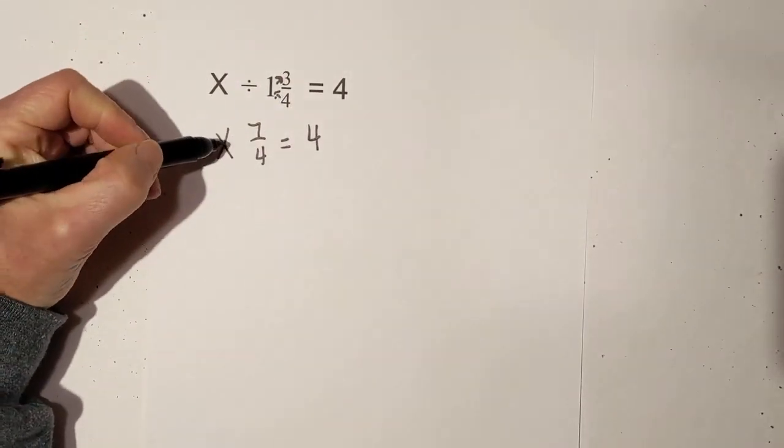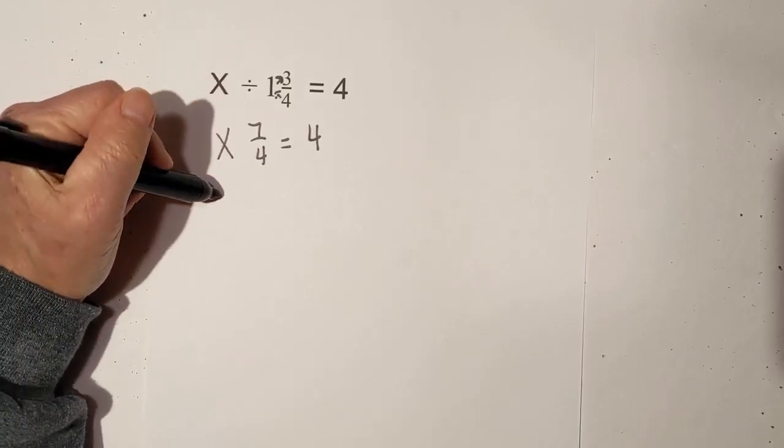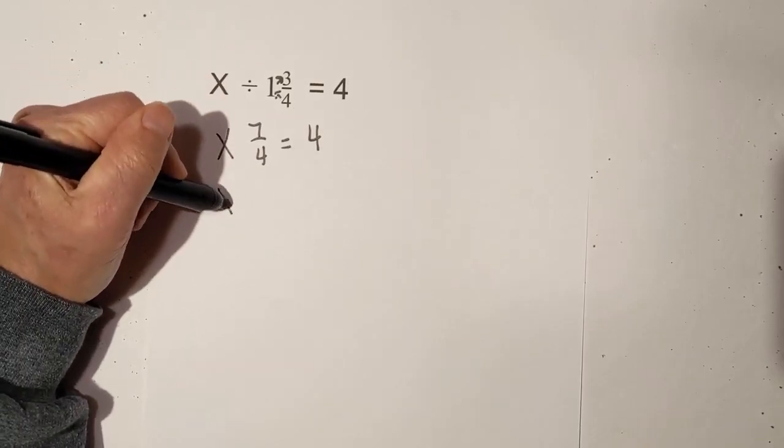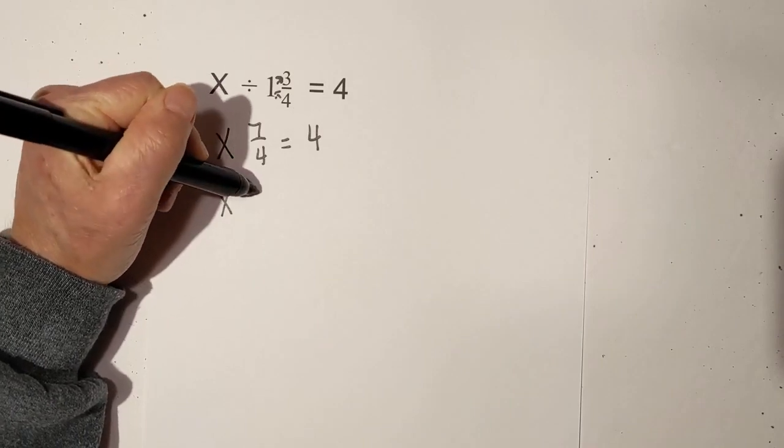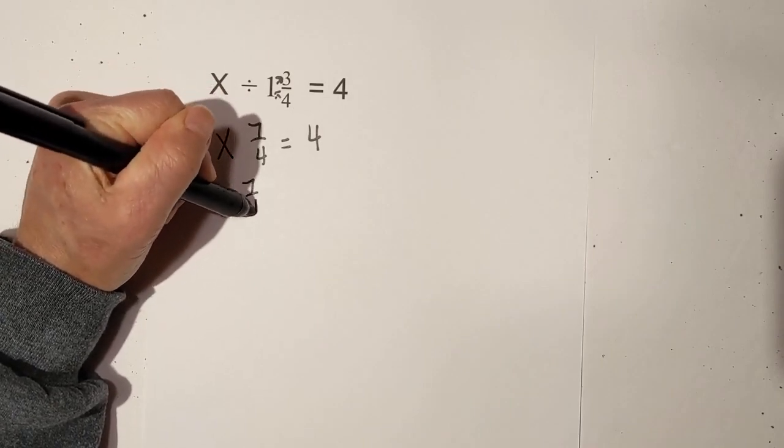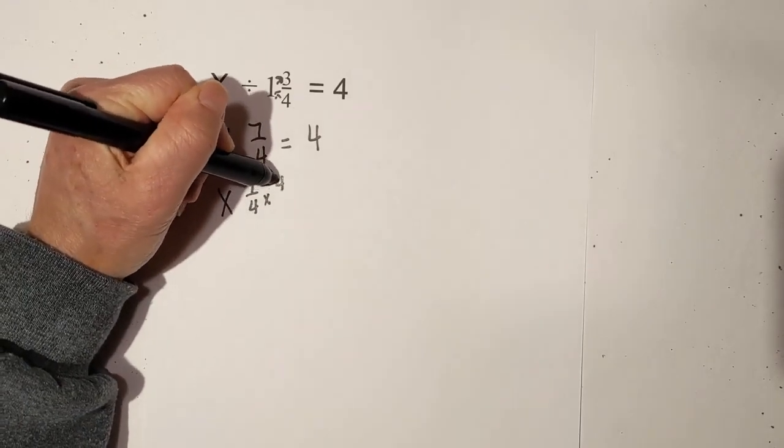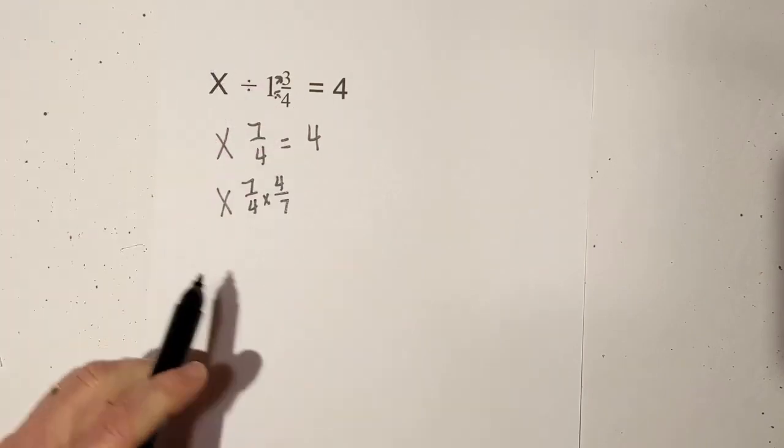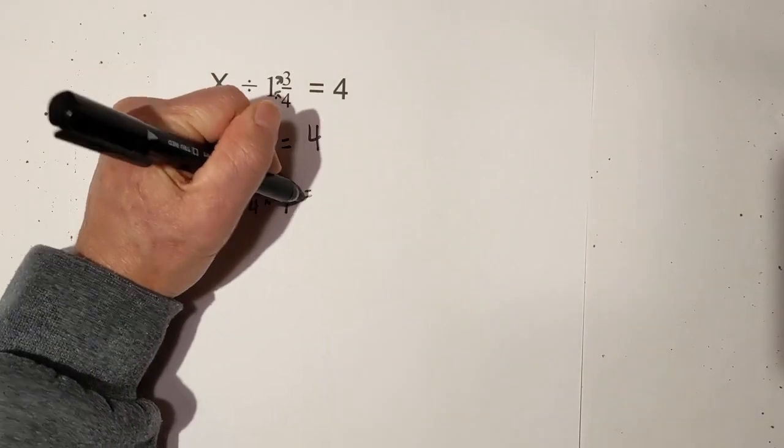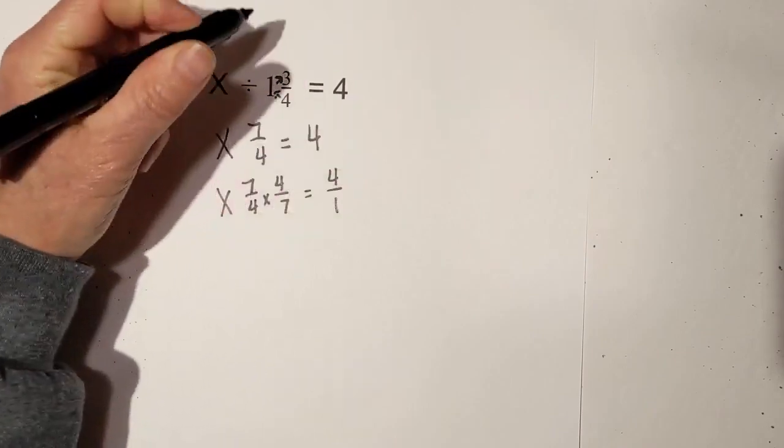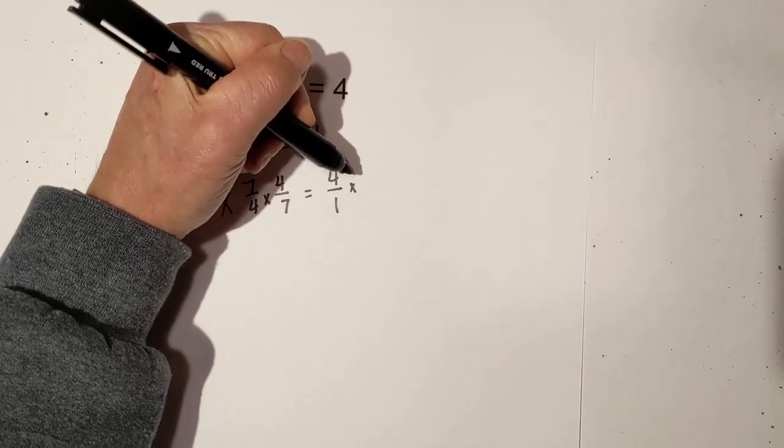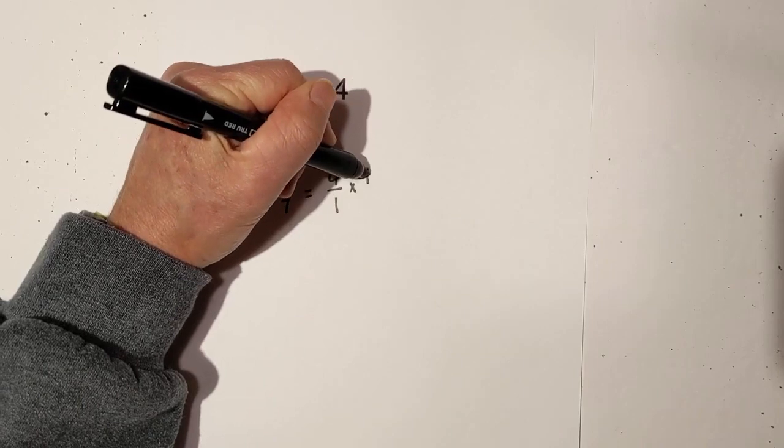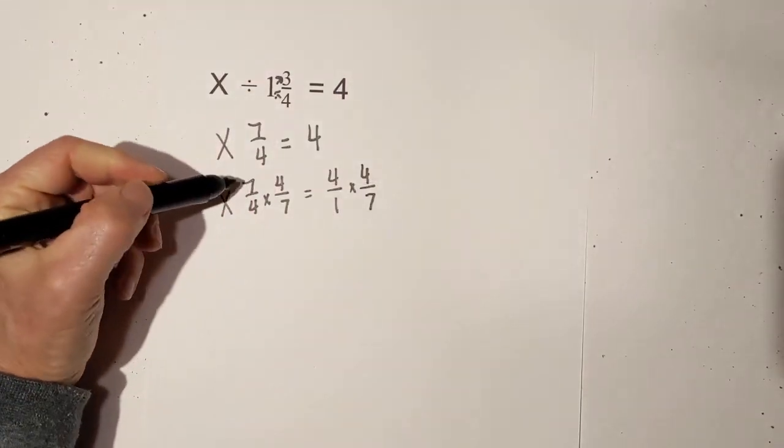Now we have division, so we're going to convert that to multiplication. We want the coefficient of x to be 1, so we're going to multiply it by its reciprocal, and that will equal 1. I'm going to place 4 over 1 and multiply it also by the same thing, and that is the reciprocal of 4 over 7.